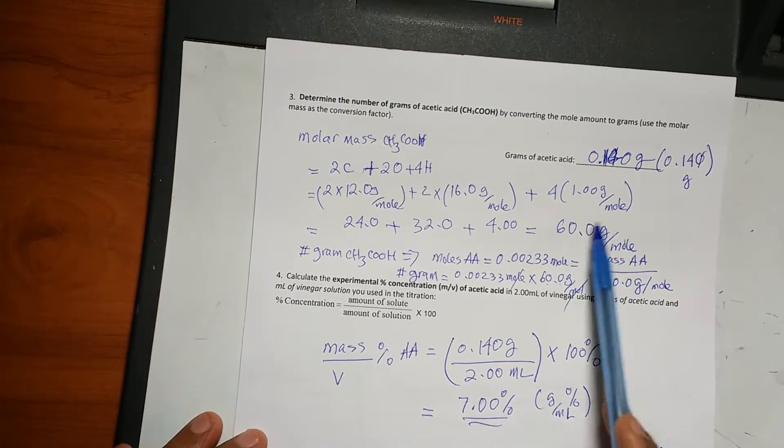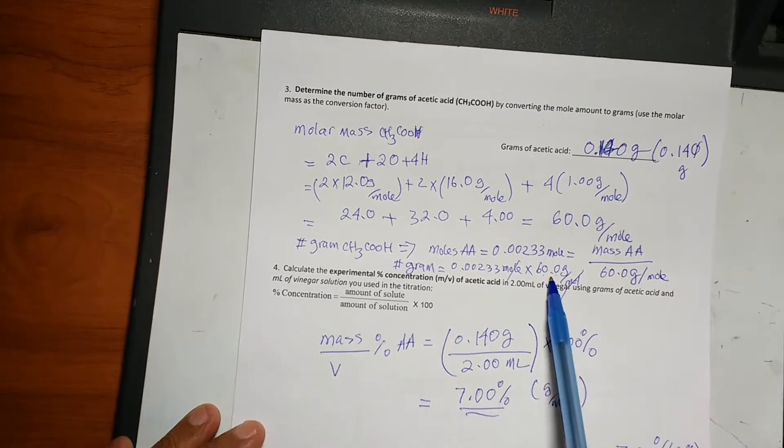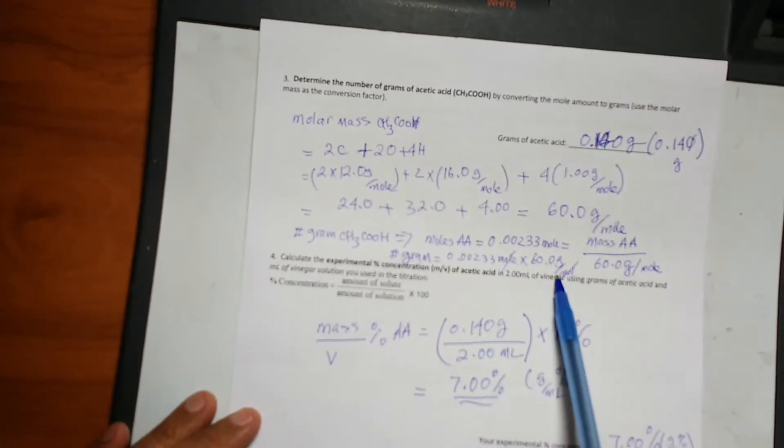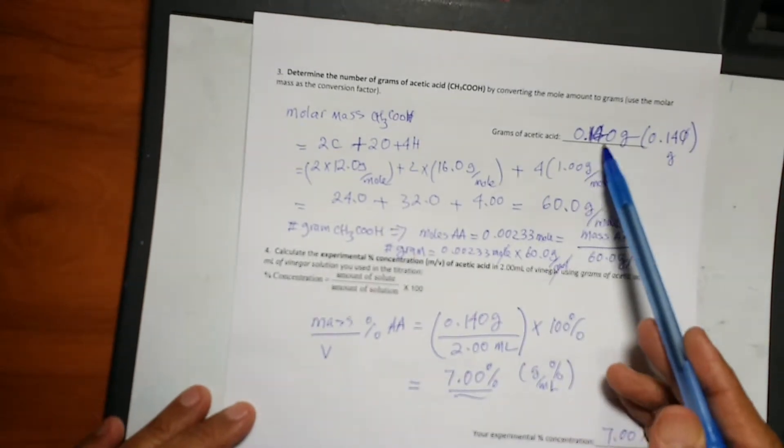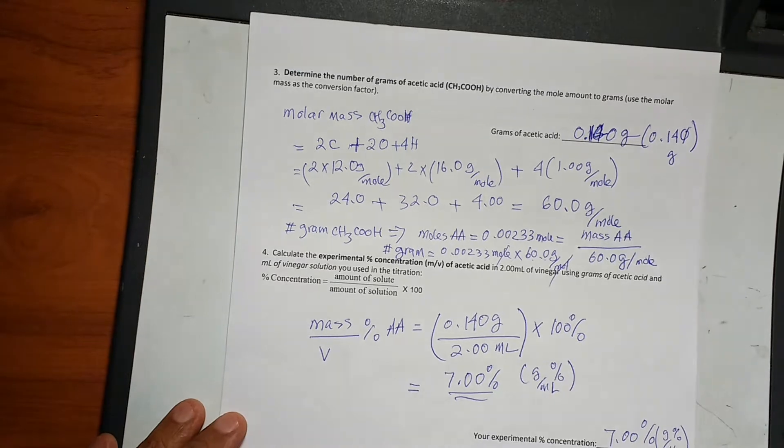If you have the molar mass and you have number of moles, you just multiply the moles by the molar mass in order to get the grams. And this is 0.140 grams available for this titration.